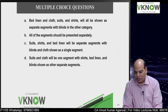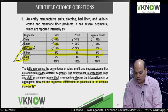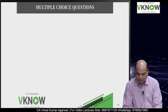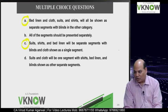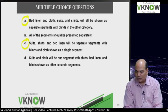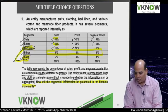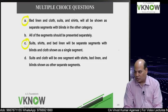Option C: suits, shirts, and bad linen will be separate segments with blinds and cloth shown as a single other segment. Option D: suits and clothes as one segment with shirts, bad linen, and blinds shown as other separate segments - this cannot be the answer because bad linen has 10% or above in sale and profit, so it must be separately disclosed. The choice is between A and C.